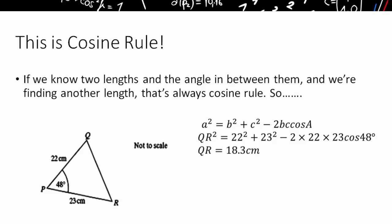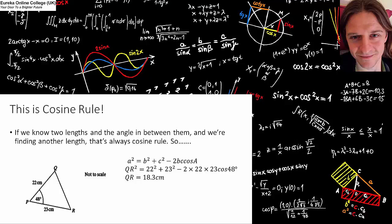Now the formula for cosine rule is a squared equals b squared plus c squared minus 2bc cos a. Personally though, I don't remember that. I just remember if I want to know a length then I need two lengths and the angle in between. Now I want to know length QR here, so then I need to do QR squared equals one of the lengths I know squared plus the other length I know squared minus two times those two lengths times together multiplied by the cosine of the angle in between. Don't forget to square root at the end, by the way, that is a very common mistake, but that should lead to QR equals 18.3 centimeters. So there's a nice little gentle start for cosine rule.